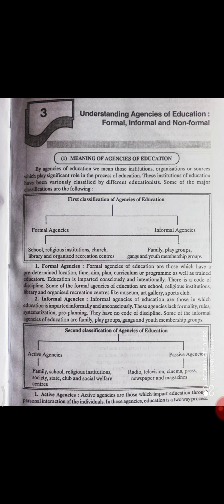Formal agencies of education میں جو education دی جاتی ہے، وہ consciously اور intentionally دی جاتی ہے — جان بوجھ کے، care کے ساتھ۔ پہلے سے پتا ہوتا ہے کہ ہمیں کیا پڑھنا ہے، کون سا topic پڑھنا ہے۔ جیسے آج ہمیں معلوم تھا کہ chapter number three — 'Understanding Agencies of Education: Formal, Informal and Non-Formal' — پڑھنا ہے۔